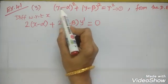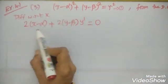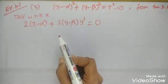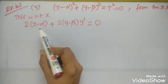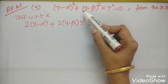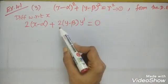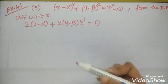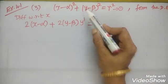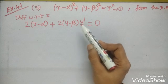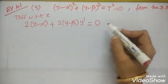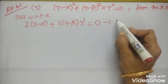Let us see once again: (x minus alpha) squared becomes 2 into (x minus alpha); (y minus beta) squared becomes 2 into (y minus beta). Whenever y comes in the problem, put y dash or dy/dx. r squared becomes 0. Call this equation number 2.